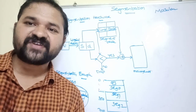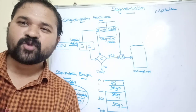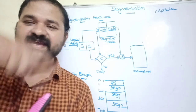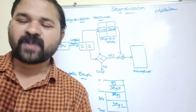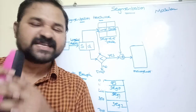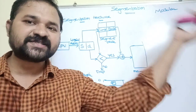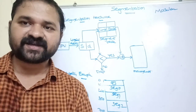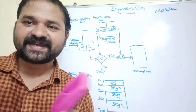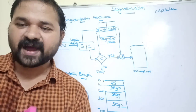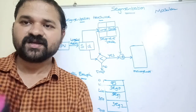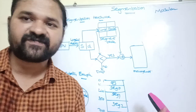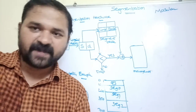The memory allocation for segments is similar to the paging process. The given process is divided into a number of partitions, but the size of each partition is equal to the size of the corresponding segment. So the size of a partition depends upon the size of a segment. If a segment size is 10 KB, then 10 KB of partition will be allocated. If a segment size is 30 KB, then 30 KB of partition will be allocated.